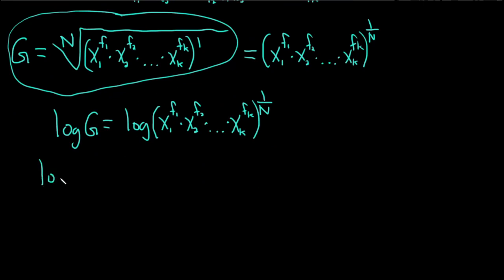So we have log G. It's called the power rule for logs. So you have 1 over capital N, then we have log of x1 to the f1 times x2 to the f2 times dot dot dot times xk to the fk.